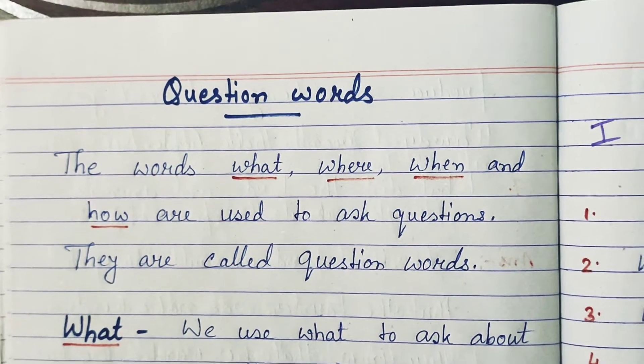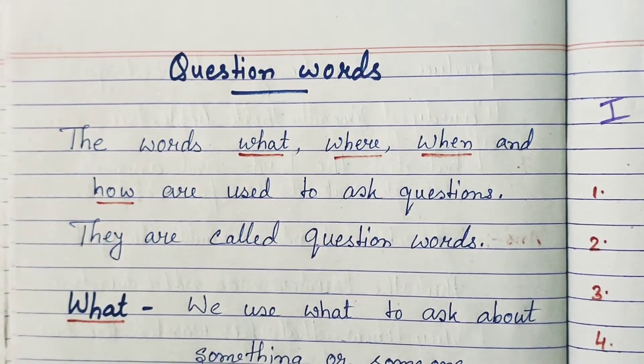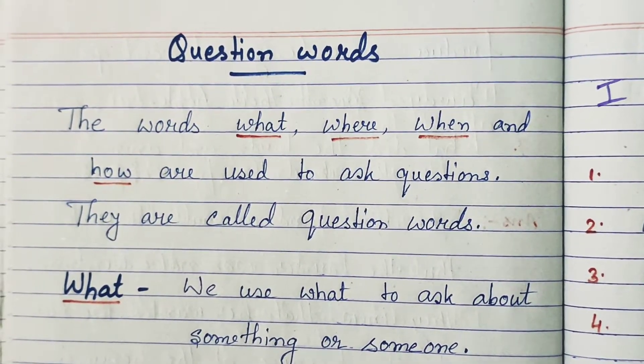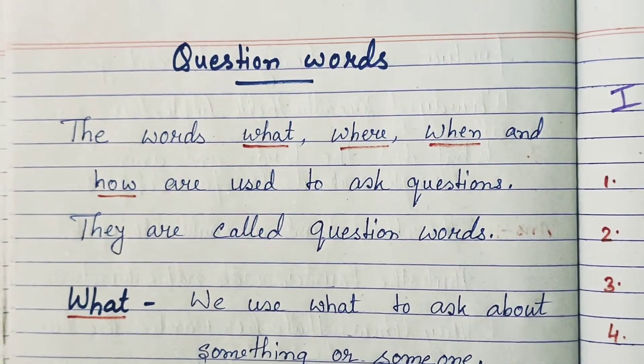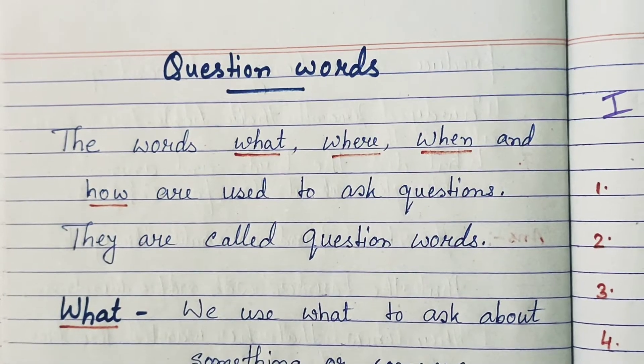So my dear children, we have learned how and when to use these question words. Now let us do some copy work and the exercise from our course book, so it will be more clear to you. All are ready with your copy, pencil and eraser? Let us start our copy work. Question words — the words 'what,' 'where,' 'when,' and 'how' are used to ask questions. They are called question words.